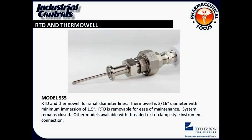Looking at different probe configurations — there is a standard fast-responding sensor with a separable thermal well that is three-sixteenths inch diameter. The sensing element is a spring-loaded, eighth-inch diameter sensor that sits inside of this well. It has a sanitary connection and uses a pipe union for installation. If you need to pull this probe out to calibrate it or if it fails during a process and needs to be changed quickly, you can just break open the union, pull it out, and put in a new one. The same design is also available with another sanitary connection rather than the threaded union.